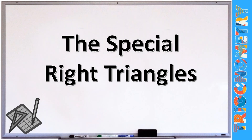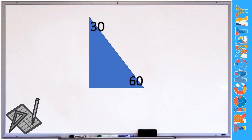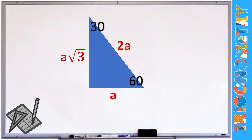Let's recall first your special right triangles. For the 30-60-90 triangle, we have the shorter leg, the longer leg, and the hypotenuse. If the value of the shorter leg is A, then the hypotenuse is 2A and the longer leg is A√3. We will use these values to find the six trigonometric ratios of the 30 and 60 degree angles.